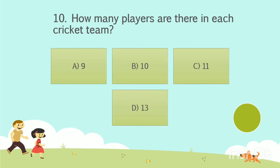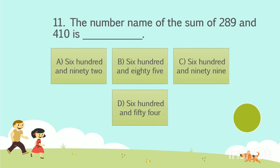Question number 10. How many players are there in each cricket team? Option A: 9. Option B: 10. Option C: 11. Option D: 13. Your time starts now. The answer is Option C, 11.